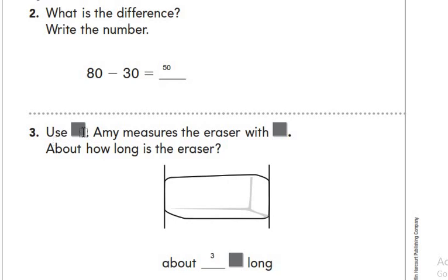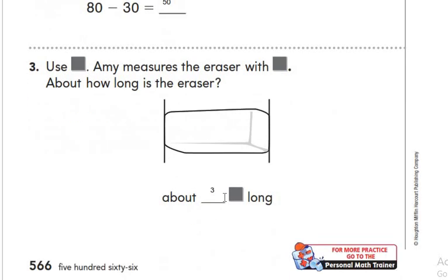Use unit squares. Emi measures the eraser with unit squares. About how long is the eraser? It's about 3 unit squares long. That's all for today. Thank you.